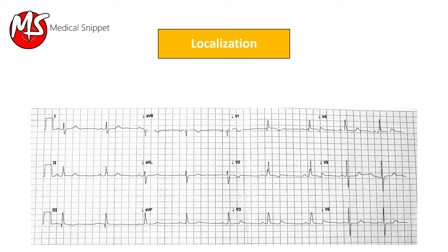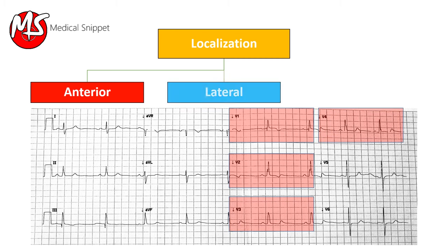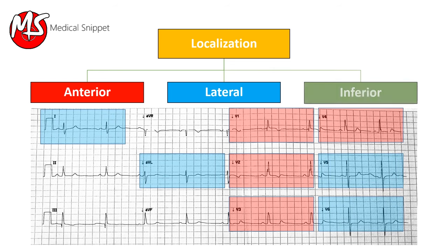In anterior wall infarction, the ECG changes are seen in V1, V2, V3, and V4 leads. In lateral wall infarction, the changes are seen in lead 1, lead AVL, V5 and V6. In inferior wall infarction, the changes are seen in lead 2, lead 3, and lead AVF.